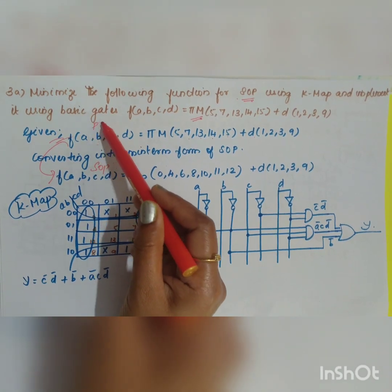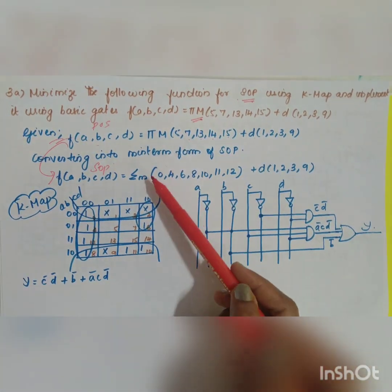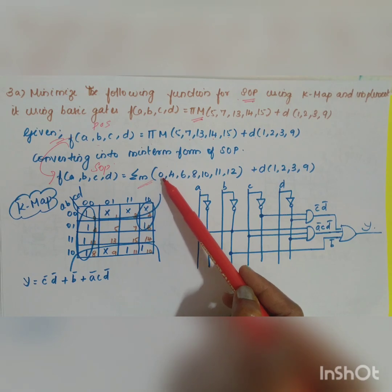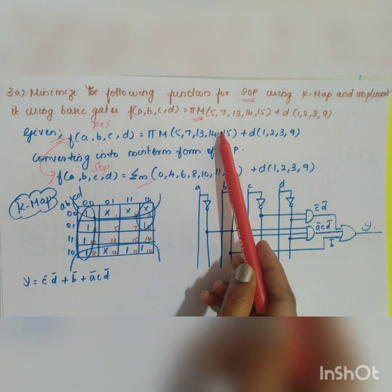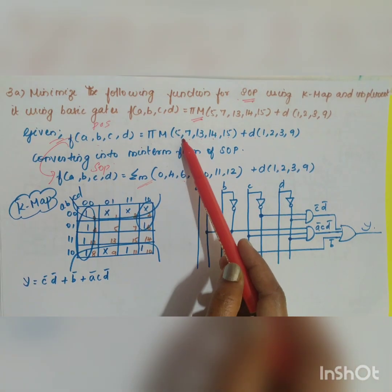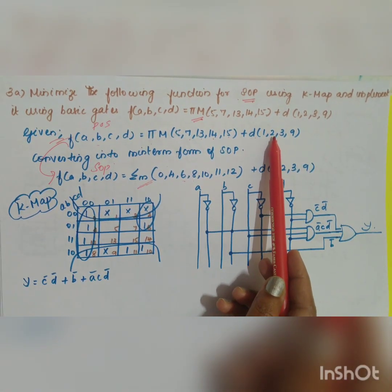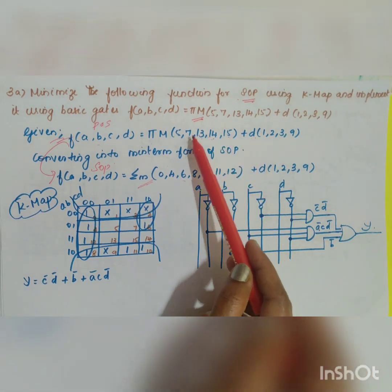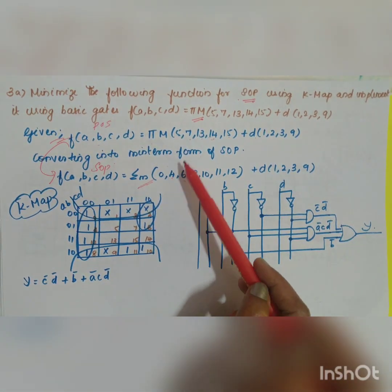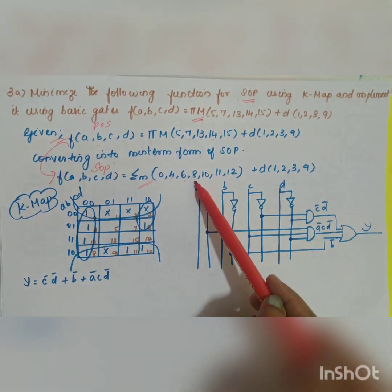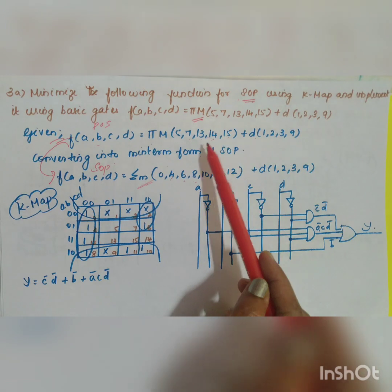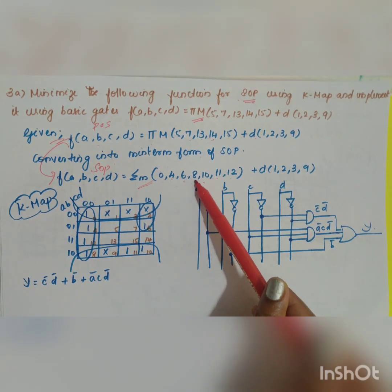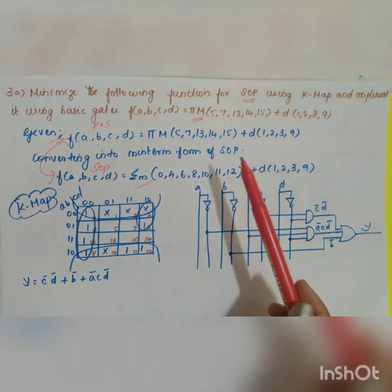When we convert product of sum into sum of product, the sum of min terms is obtained by taking whatever is not present in your max terms, excluding the don't cares as well. So 0 is not included; 1, 2, 3 are in don't care. 4 is not present, 6 is not present, 8 is not present, 10, 11 are not present. So the sum of min terms equals 0, 4, 6, 8, 10, 11, 12 plus don't care of 1, 2, 3, 9.